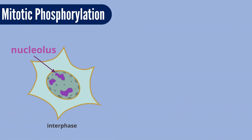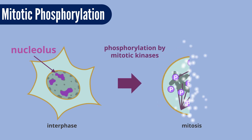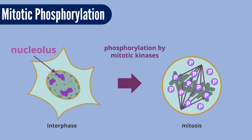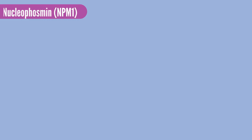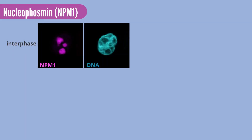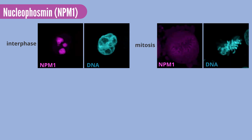We focused on nuclear proteins which are heavily phosphorylated upon the entry of mitosis. Nucleophosmin, NPM1, plays a critical role in the formation of nucleoli, a liquid-like organelle in interphase. Upon the entry of mitosis, nucleoli dissolve and NPM1 is dispersed into the cytoplasm.